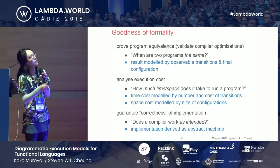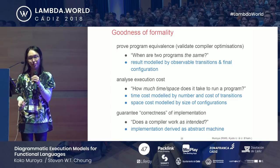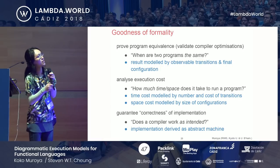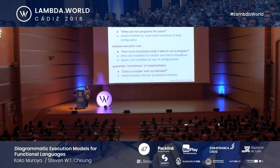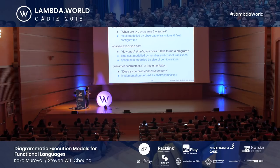Especially the first question — when are two programs the same — is crucial to have safe compiler optimizations. But these questions all contain some informality. To answer them, we need to make clear what we mean by 'same,' by time and space cost, and by the expectation of behavior. Formality is what we need, and by introducing the focus moving around the program, we can tackle these questions.